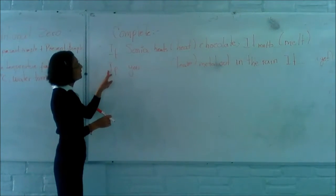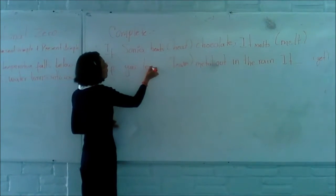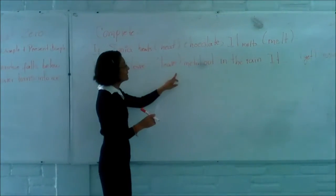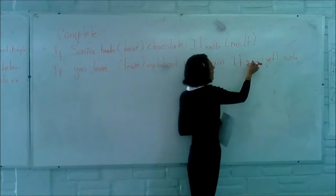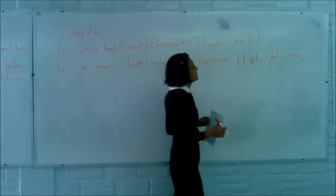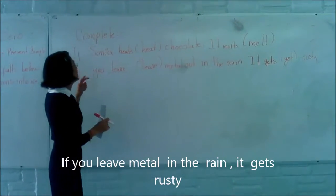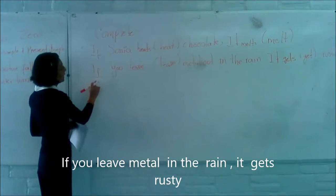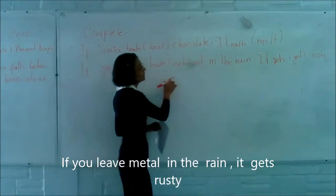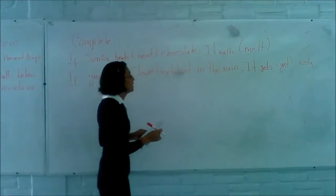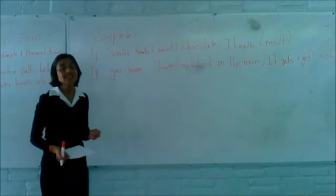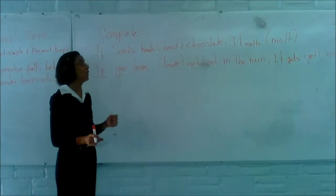Second sentence: if you leave metal out in the rain, it gets rusty. This sentence has the form if + present simple + present simple, and this is conditional zero because it expresses something which is always true.